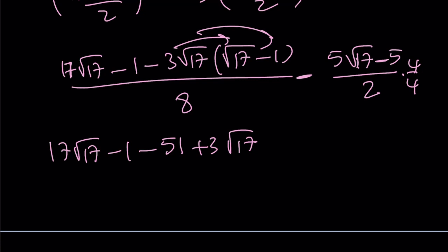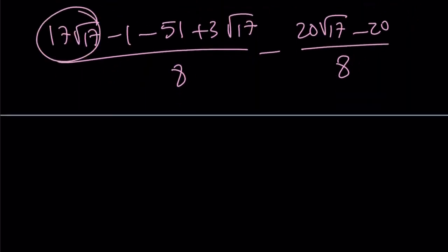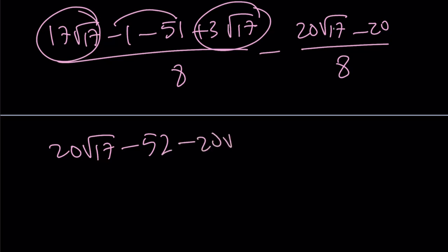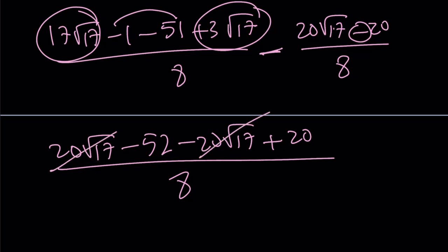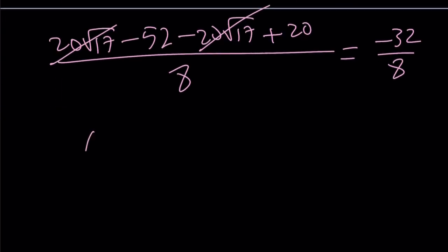That is divided by 8. Let's write it this way and then we'll subtract the numerators. This plus this becomes 20 root 17. Negative 1 minus 51 is negative 52. Now we're going to subtract 20 root 17 and add 20 because of the double negative, divide by 8. 20 root 17 cancels out. Negative 52 plus 20 equals negative 32 over 8, which equals negative 4. Great.